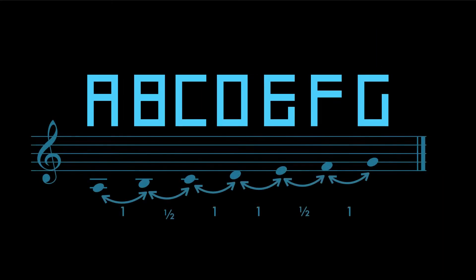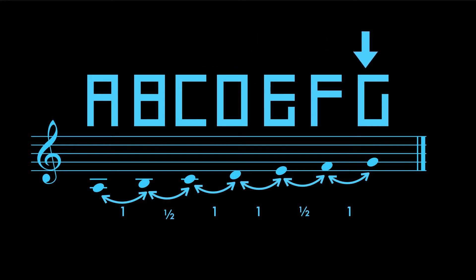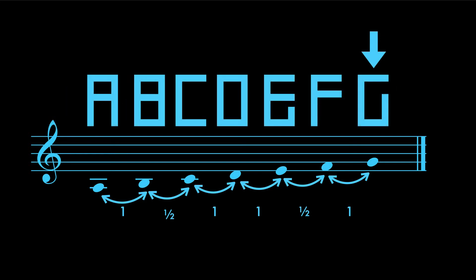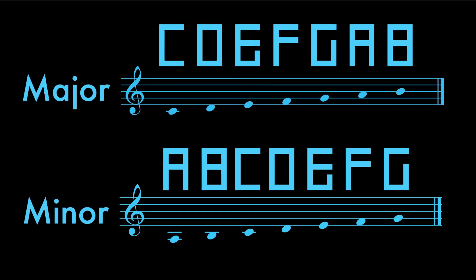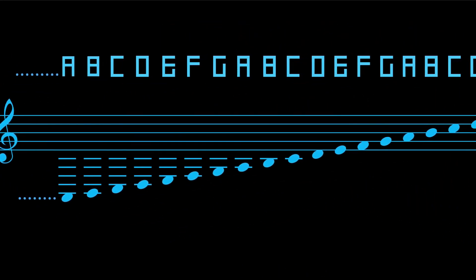Another order is A B C D E F G, which is called the natural minor scale. Both scales contain only natural letters and a specific interval order in between them, which you are supposed to memorize, internalize, and apply to the other notes in order to reach the other scales.